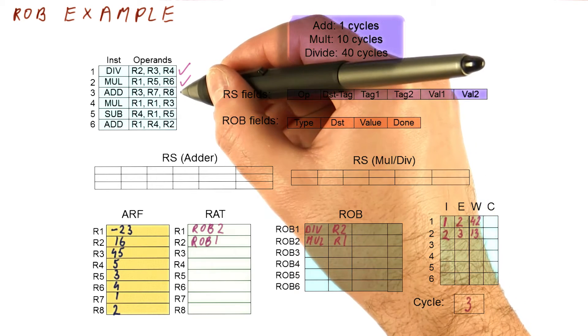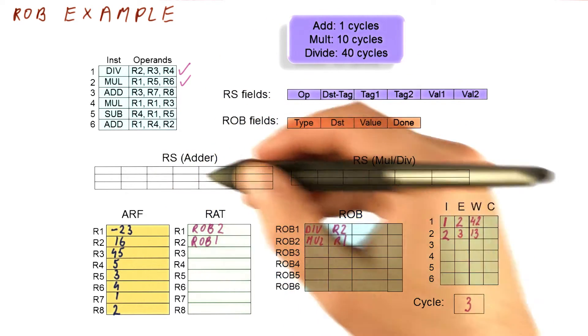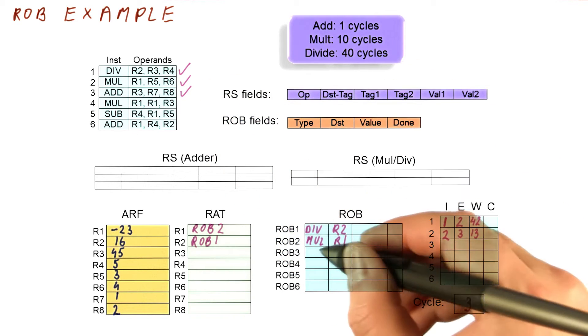So in cycle three, we're going to try to issue this instruction here. It's an add, so we check, do we have this type of reservation station? Do we have ROB entries? Yes, we do have both. So what we're going to do is we're going to issue this instruction.